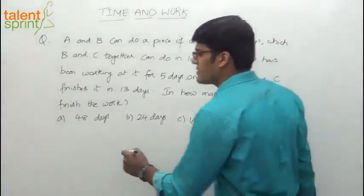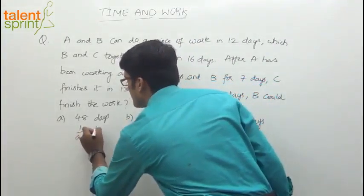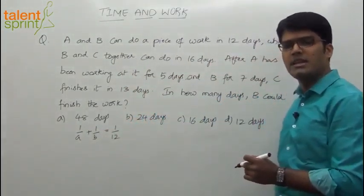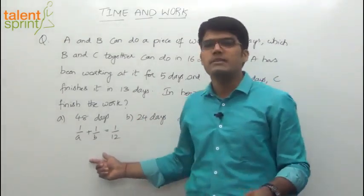A and B can do a piece of work in 12 days. So what do we know? 1 by A plus 1 by B equals 1 by 12. That's the equation.